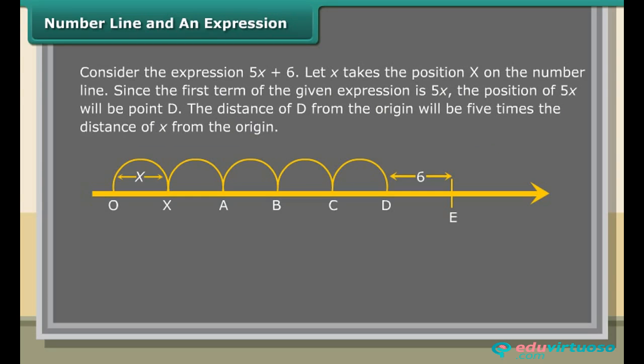Consider the expression 5x + 6. Let x take position x on the number line. Since the first term is 5x, the position of 5x will be point D. The distance of D from the origin will be 5 times the distance of x from the origin. Therefore, the position E of 5x + 6 will be 6 units to the right of D.